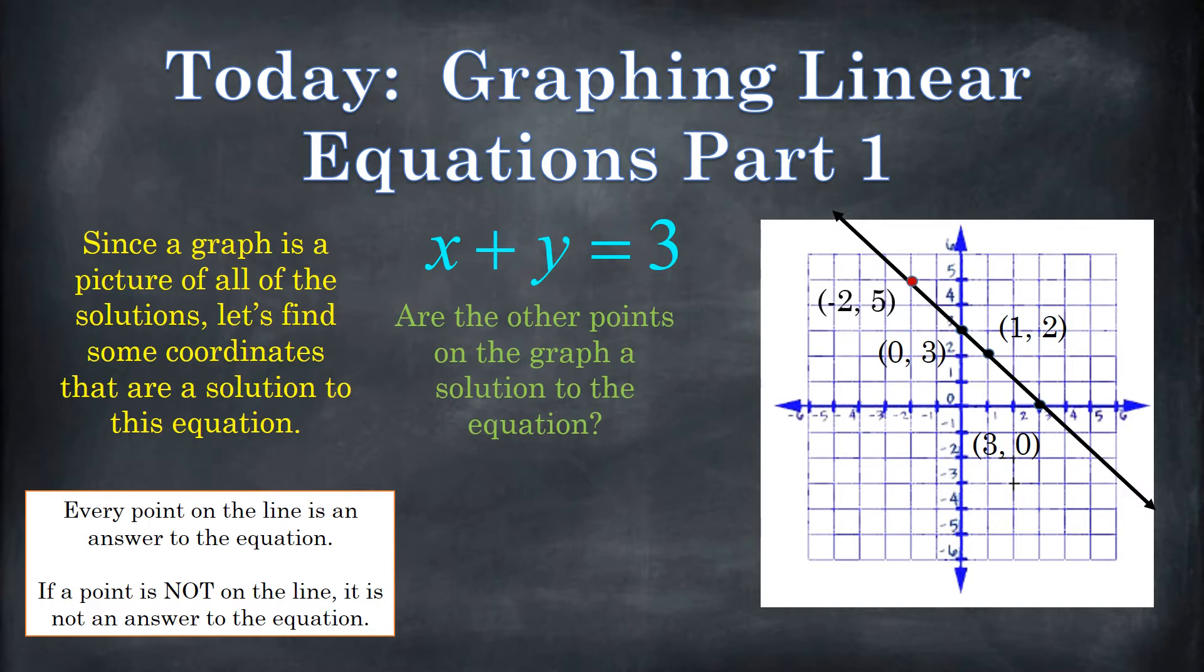So as we said, this point right here, negative 2 comma 5 is a solution. It's a point on the line. Negative 2 is x. 5 is y. Negative 2 plus 5 is 3. A solution is a value that makes the statement true, and we're done. So that is a good answer right there.